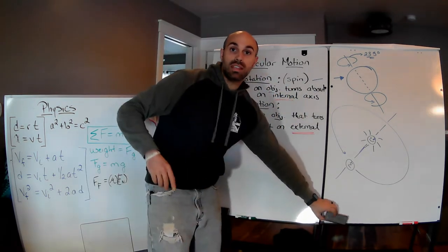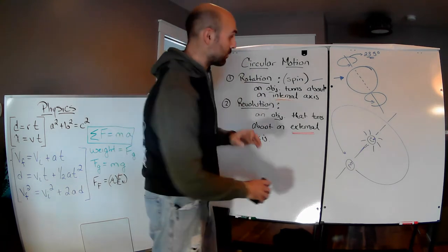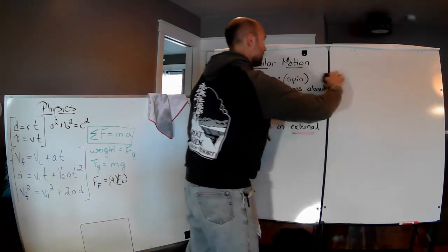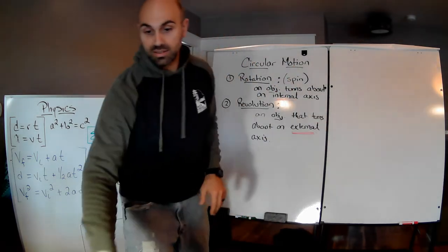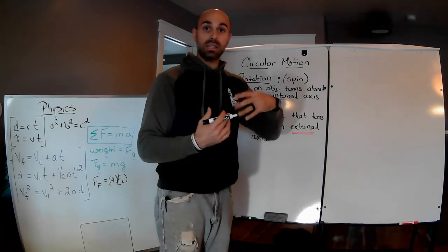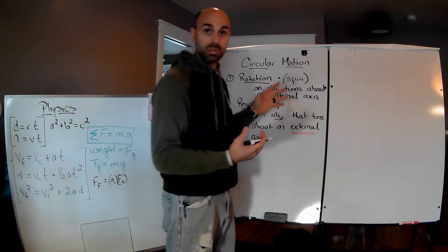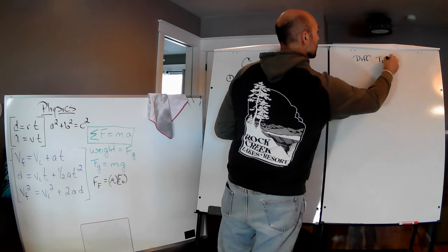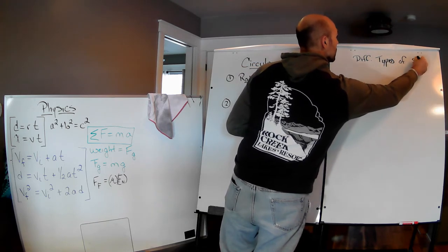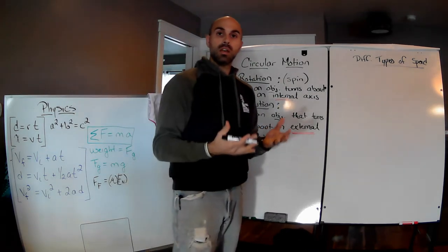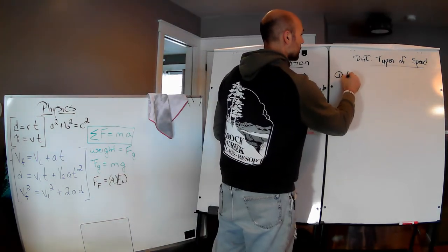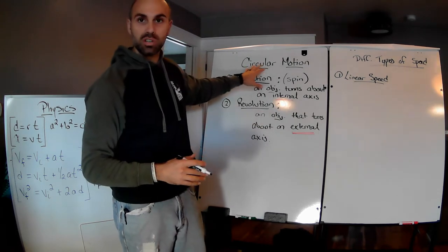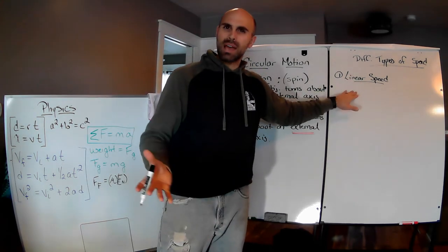The next thing we're going to introduce is the types of speeds or velocities we could talk about in circular motion. There are three types. Number one: Linear Speed. I know it's kind of weird — we're talking all about circular motion but now we threw the word 'linear' back in there. Linear is a straight line, so what does that have to do with circular motion? Let's find out.